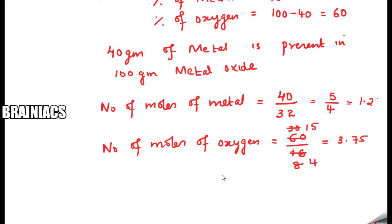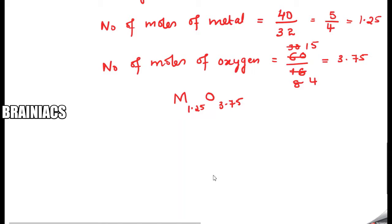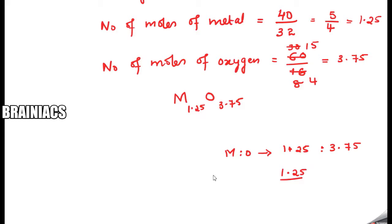So the metal to oxygen ratio is 1.25 : 3.75. They are asking for the empirical formula, so we need the lowest possible ratio. Divide by the smallest number, 1.25: 1.25/1.25 = 1 and 3.75/1.25 = 3. So metal to oxygen ratio is 1:3, giving an empirical formula of MO₃.